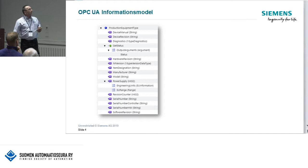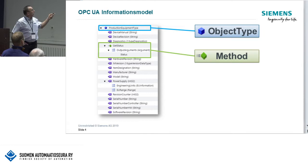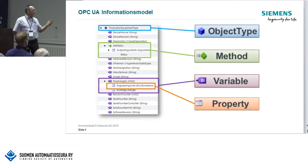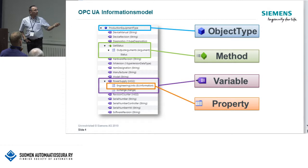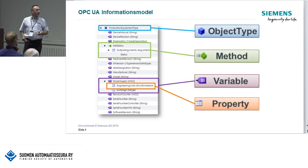In the information model it looks like this: here I take an example — we have a production equipment type, which is an object type. On this you get methods, variables, and of course you can define properties. These properties also carry meaningful information like engineering unit information, so they can tell you it's revolutions per minute, not millimeters per second, meters per hour, or pieces per day.